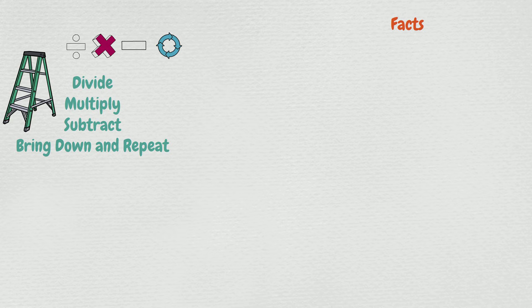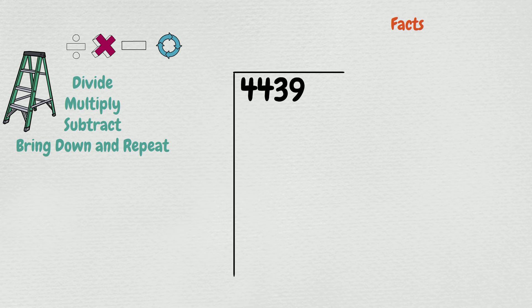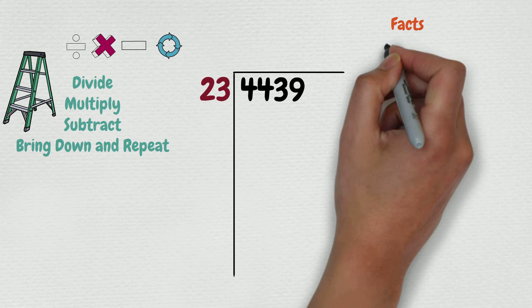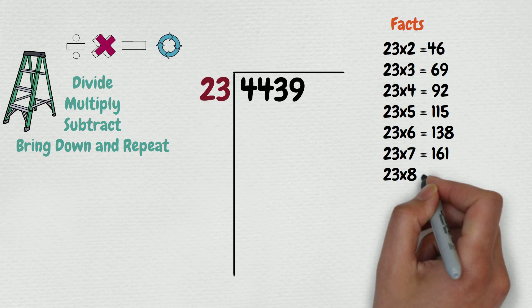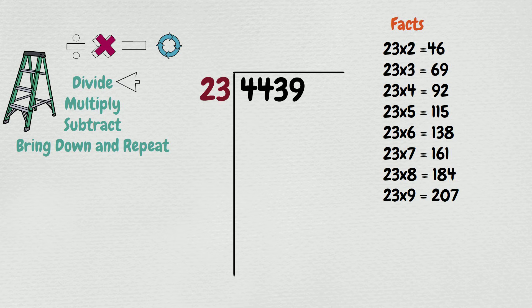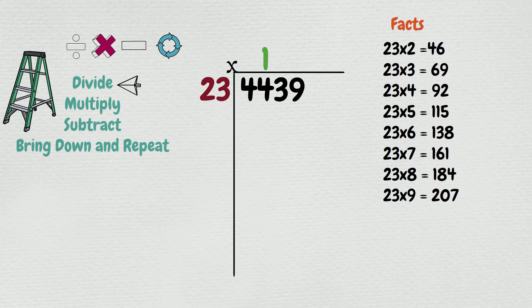Let's try another example: 4,439 divided by 23. You can list facts for 23 by doing repeated addition. Let's follow our steps. Our first step is to divide. How many times does 23 go into 44? One time. Now put the 1 above 44 and multiply — 23 times 1 equals 23.